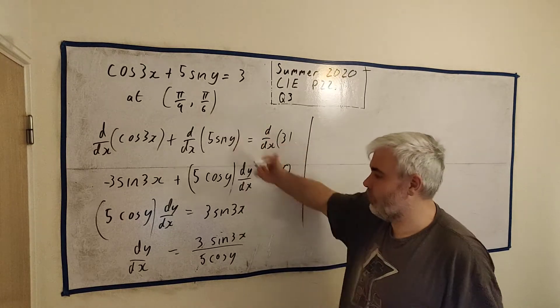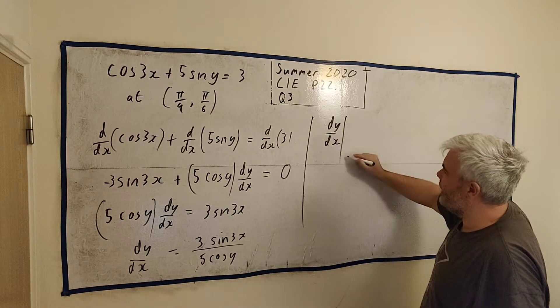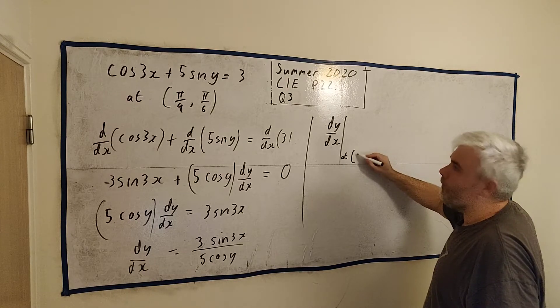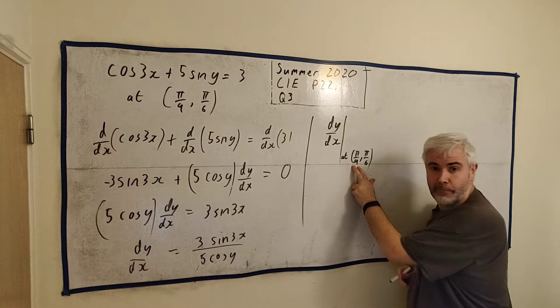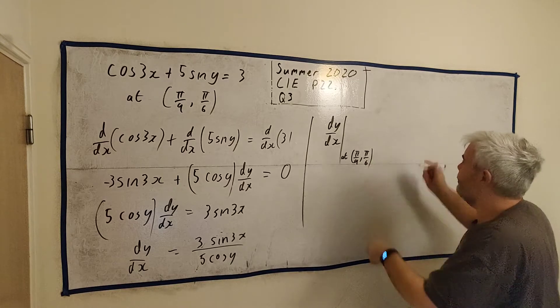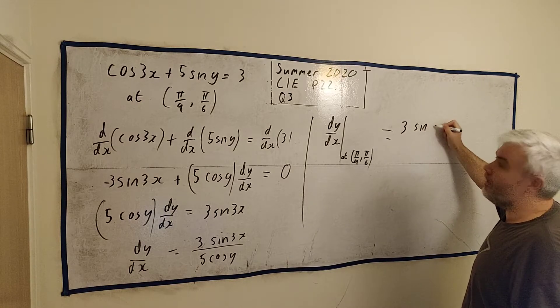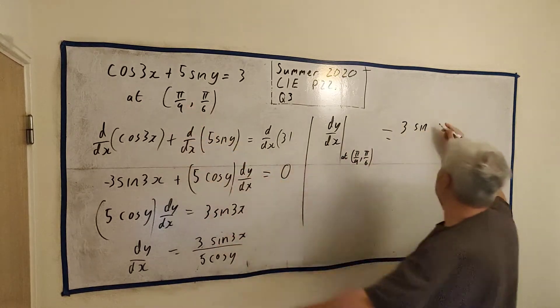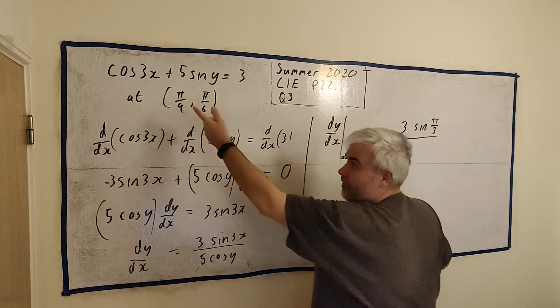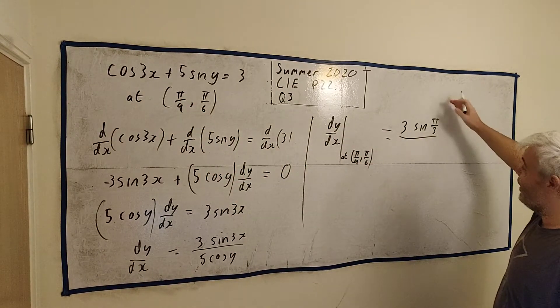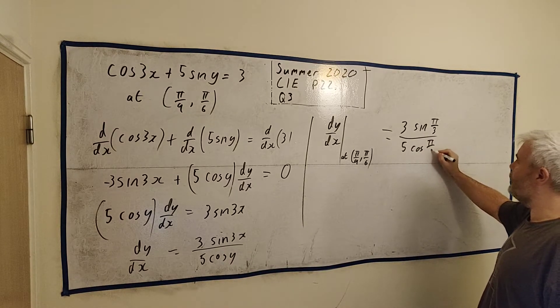So dy/dx is, well, another way to write this is dy/dx at this point, pi over 9, pi over 6. Or you can write x equals pi over 9, y equals pi over 6. dy/dx is equal to 3 times sine 3 times this. 3 times that is pi over 3. I'm just multiplying 3 pi divided by 9 is 1 over 3, pi over 3. And the bottom row gets 5 cosine pi over 6.